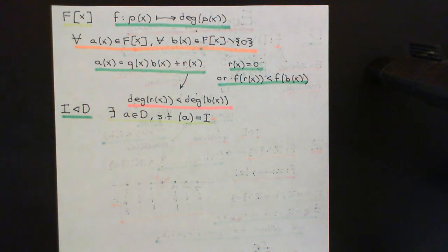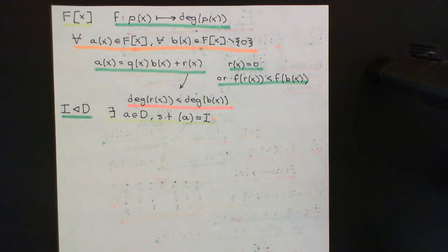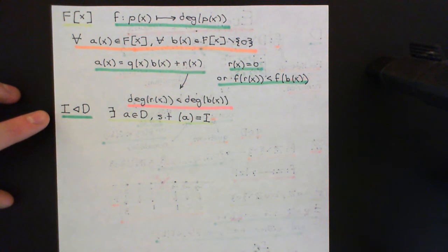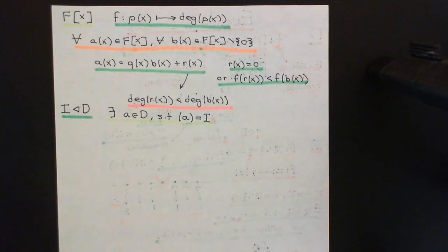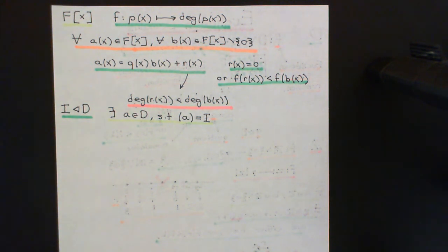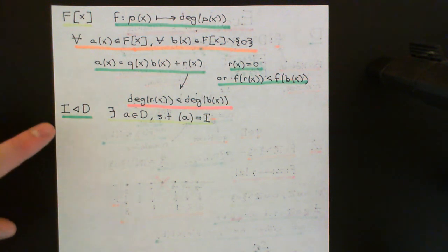This ideal capital I contains a whole bunch of elements from our Euclidean domain capital D. I want you to go through that ideal and find an element that has the smallest possible Euclidean size function. All of those elements will have Euclidean sizes, except of course the additive identity. Of the ones that do have Euclidean sizes, look for one that has the smallest value in your ideal. There must be a smallest Euclidean size function value in your ideal.